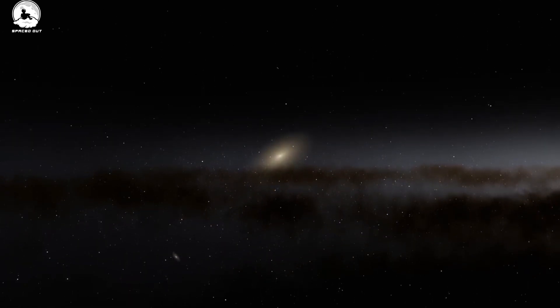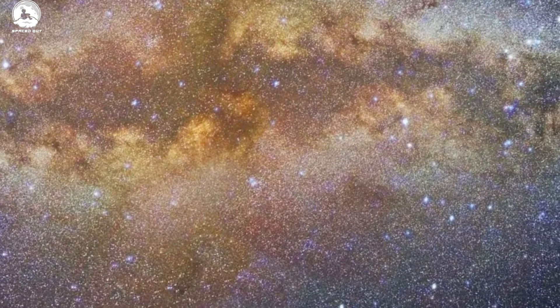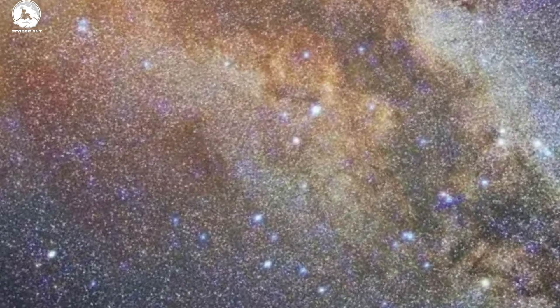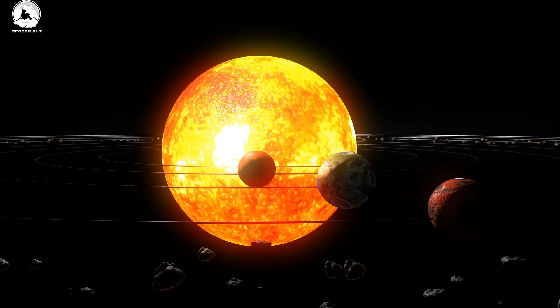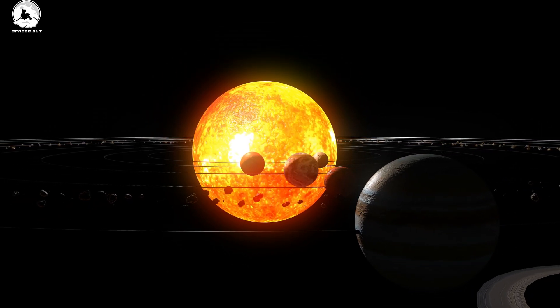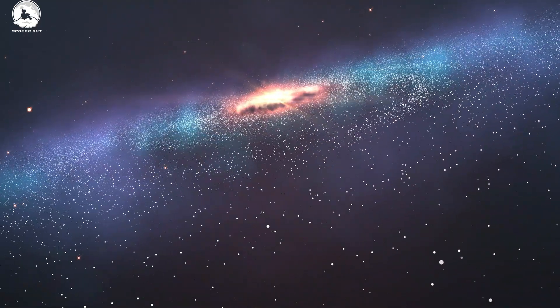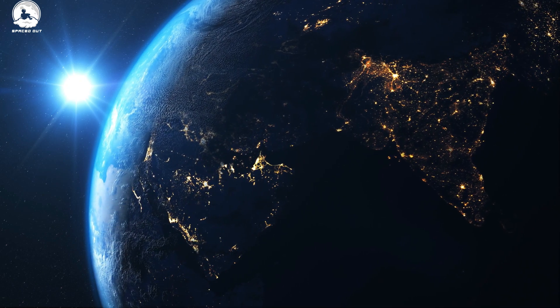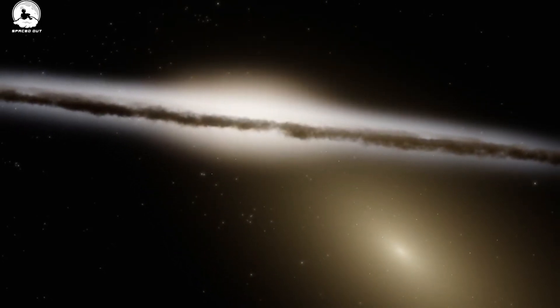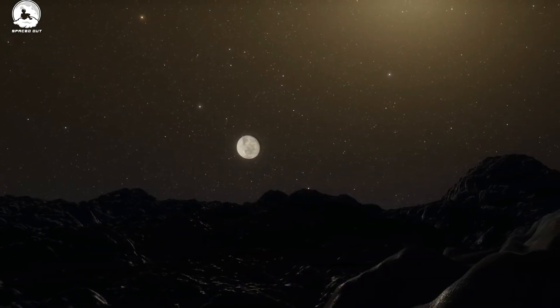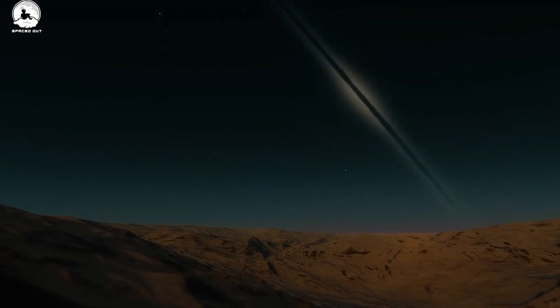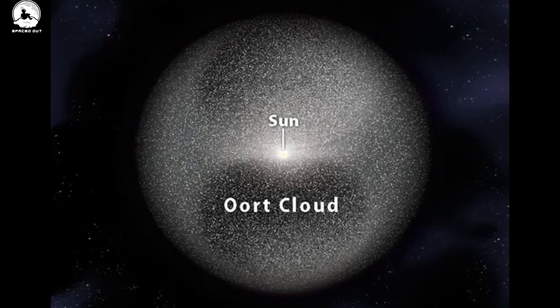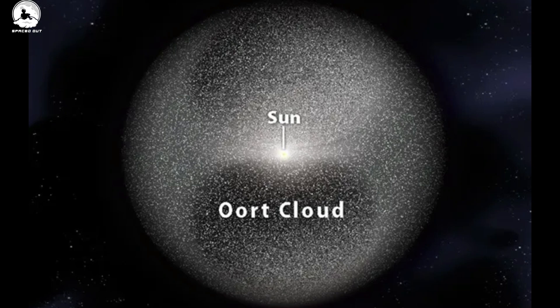For our solar system, nestled in one of the outer arms of the Milky Way, the effects are uncertain. While we're far from the central regions where the most dramatic interactions will occur, the gravitational waves from the merger could still reach us. This might disrupt the orbits of planets, potentially affecting our climate. The sun, our primary source of energy and life, might find itself in a different position within the new galaxy, changing our perspective of the night sky forever. And what about Earth? Our planet has faced cosmic challenges before, from asteroid impacts to solar flares. But a galactic merger is on a whole different scale. While the direct effects might be minimal, there could be indirect consequences. For instance, if our sun gets too close to another star, it could disrupt the Oort Cloud, a region at the edge of our solar system filled with icy bodies. This disruption could send comets hurtling towards the inner solar system, posing potential threats to Earth.